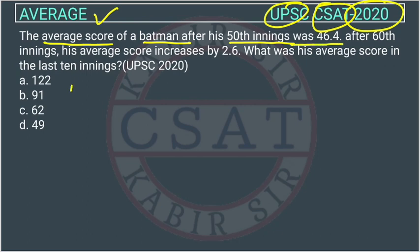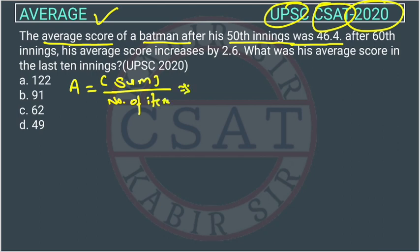The formula of average is sum divided by number of items. They have given the average as 46.4 for 50 innings. So let N1, N2, ... up to N50 represent the scores in each inning.